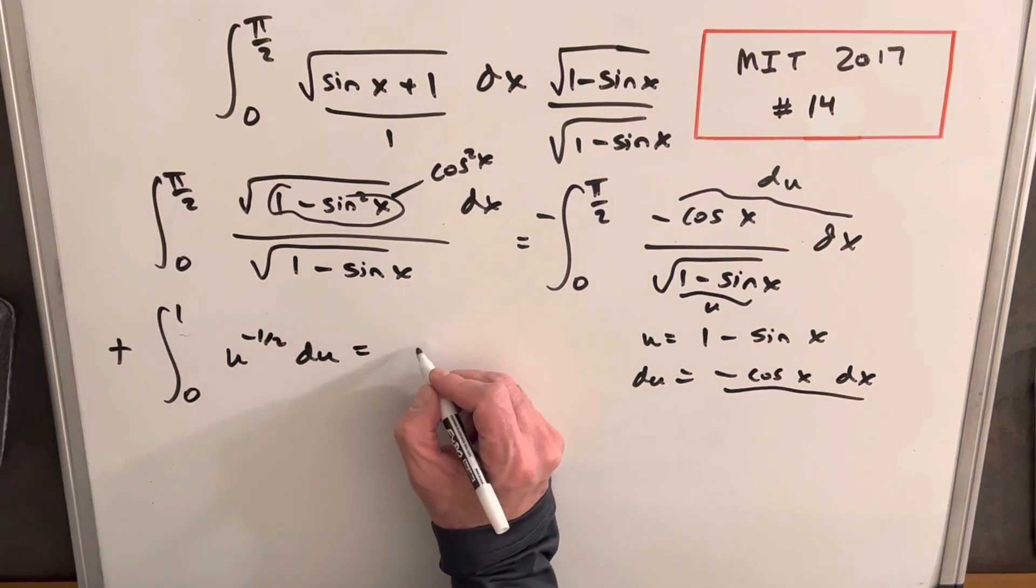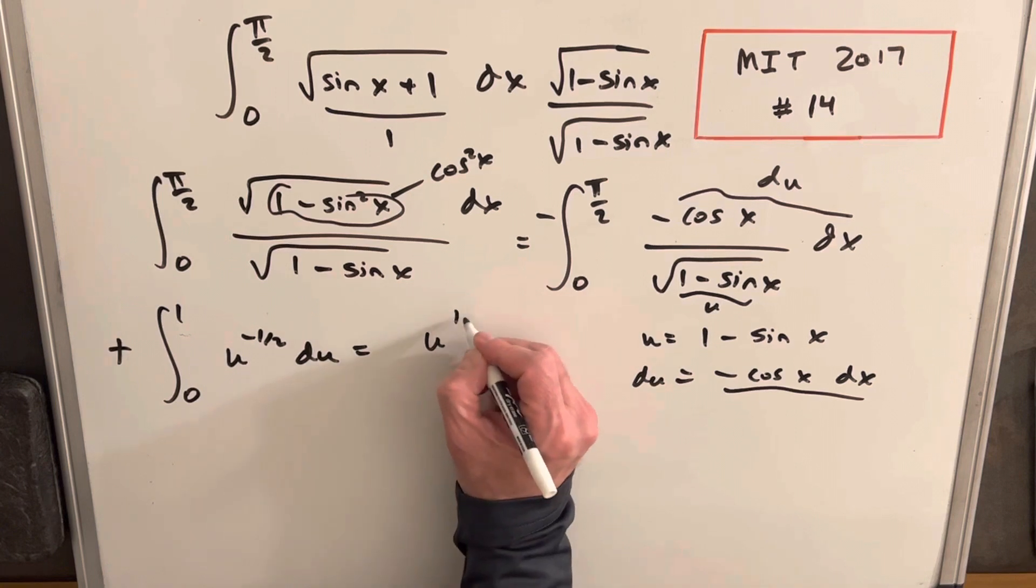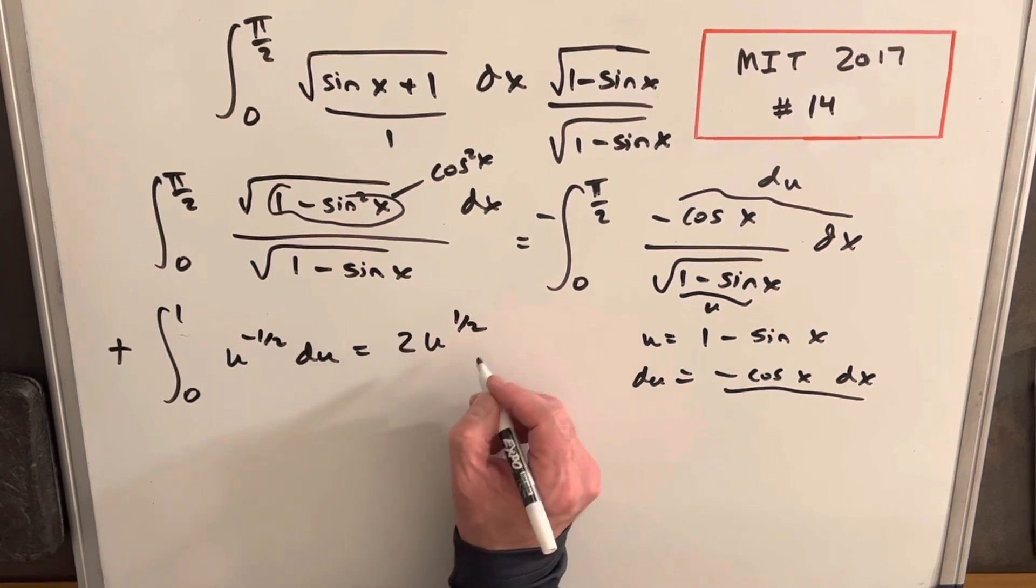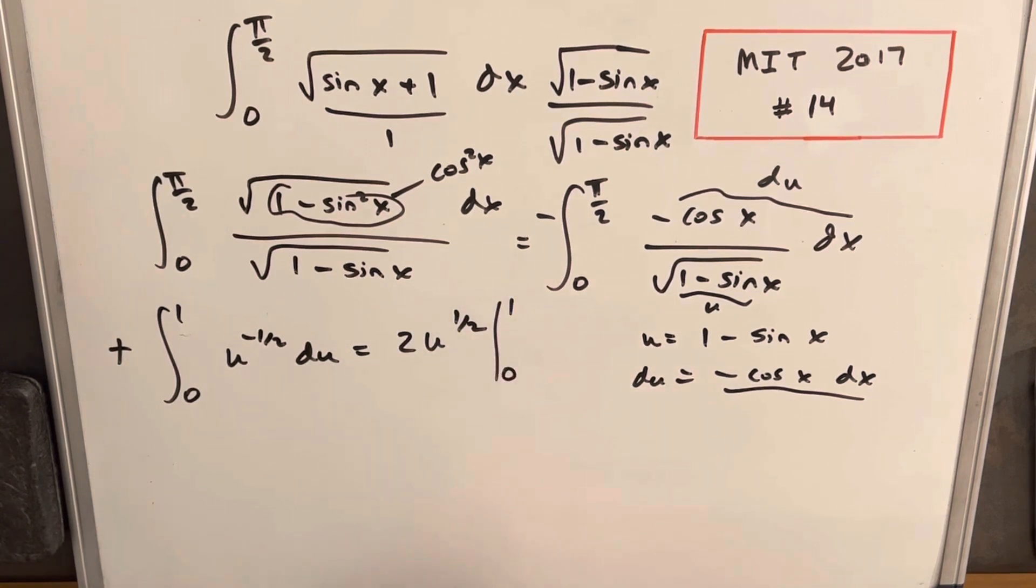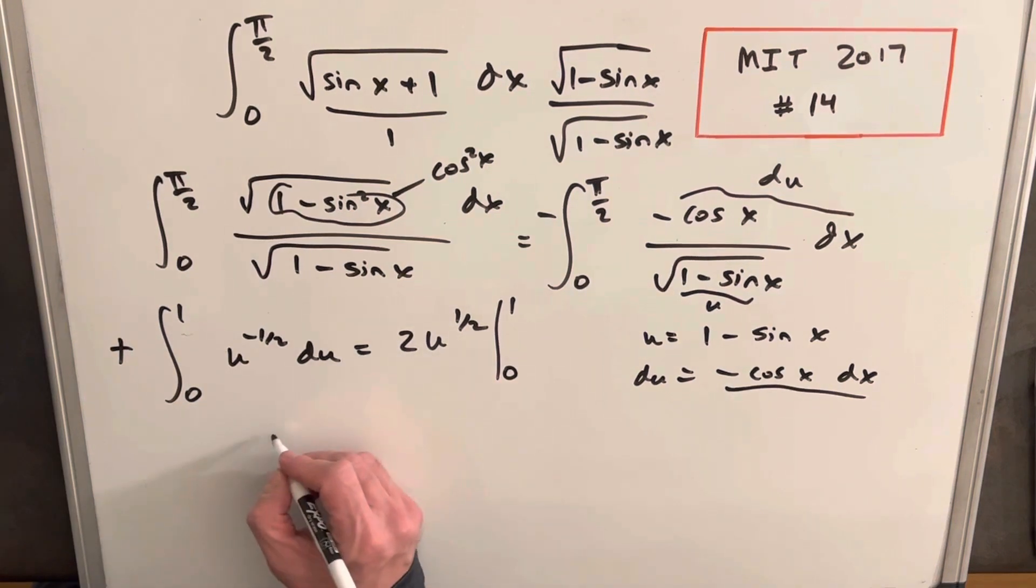Then we can just use the power rule. Integral of this thing is going to be u to the 1 half times 2. Just evaluate from 1 to 0. So plugging in 1 here, we're just going to have 2 times square root of 1 is 1. So we're just going to have 2 minus plugging in 0 is just going to be 0.